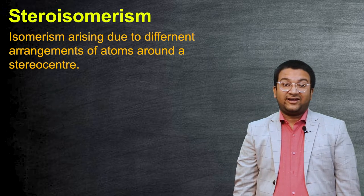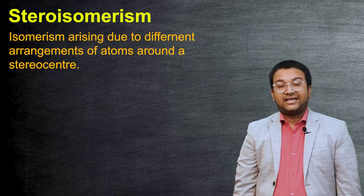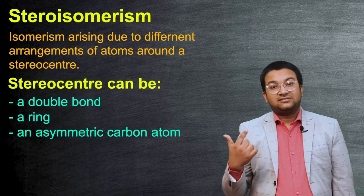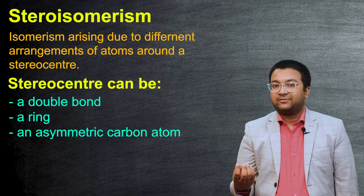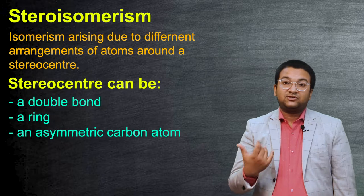Hello champions, I'm Chandan Biswas and in this video we are going to learn about stereoisomerism. Stereoisomerism is a specific type of isomerism which arises due to difference in the arrangement of atoms around the stereo center. Now what can be a stereo center? A stereo center can be a double bond, it can be a ring, or it can be an asymmetric carbon atom.